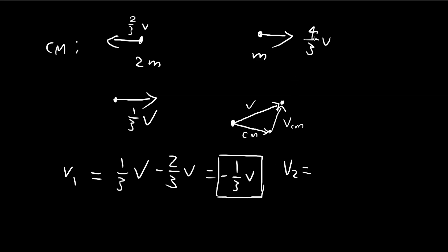And then we do the same thing for this particle. So the velocity of the CM plus the velocity of the particle with respect to the CM is equal to 5 over 3v. So once again, this agrees with our previous result.